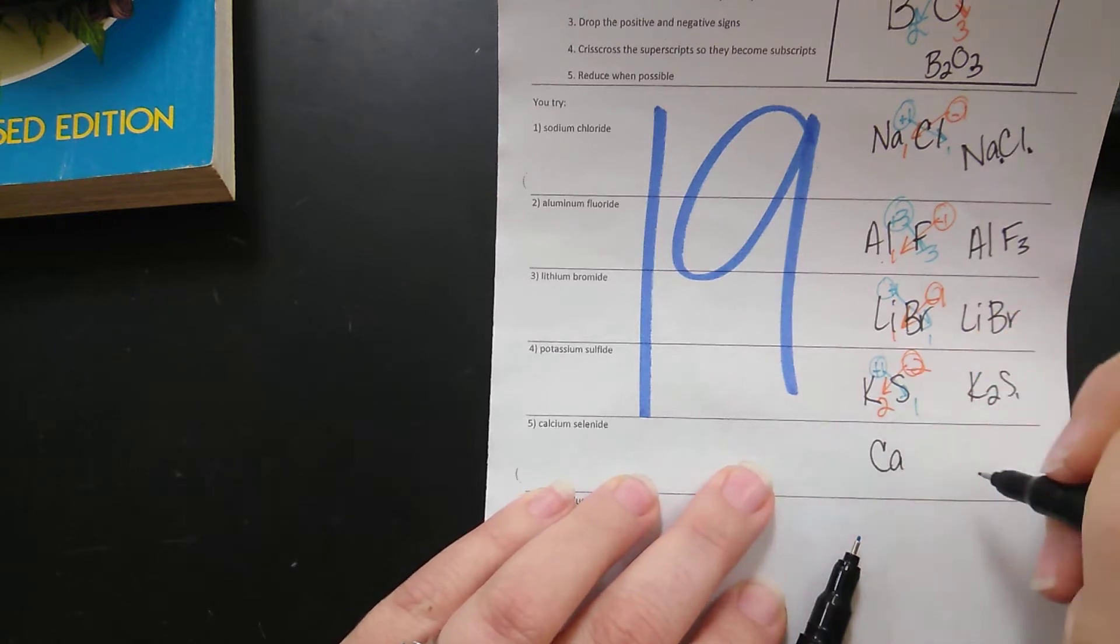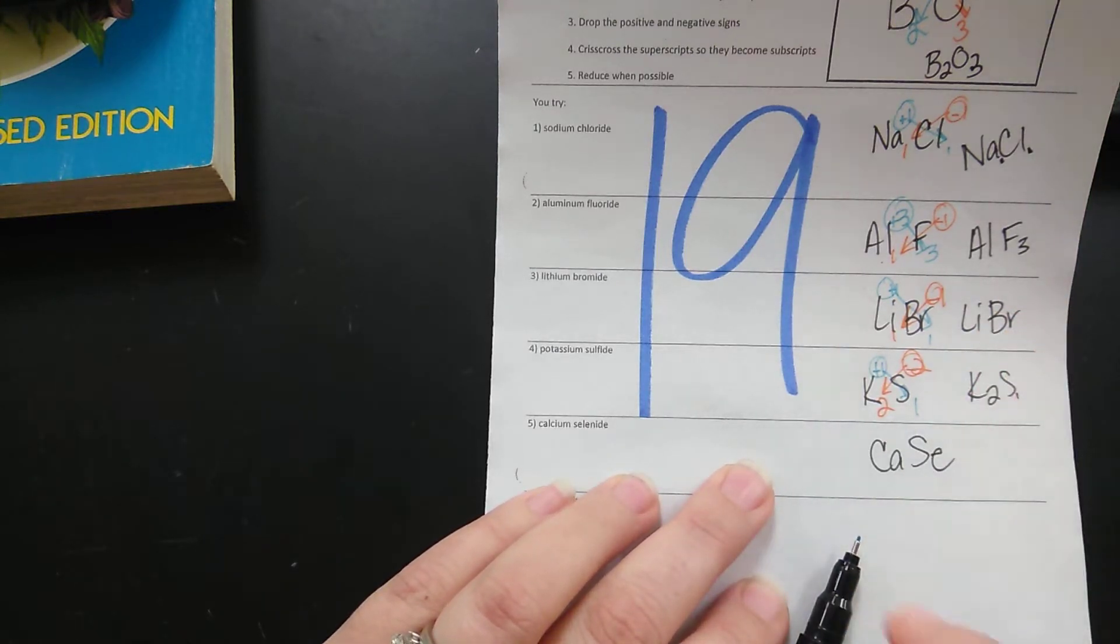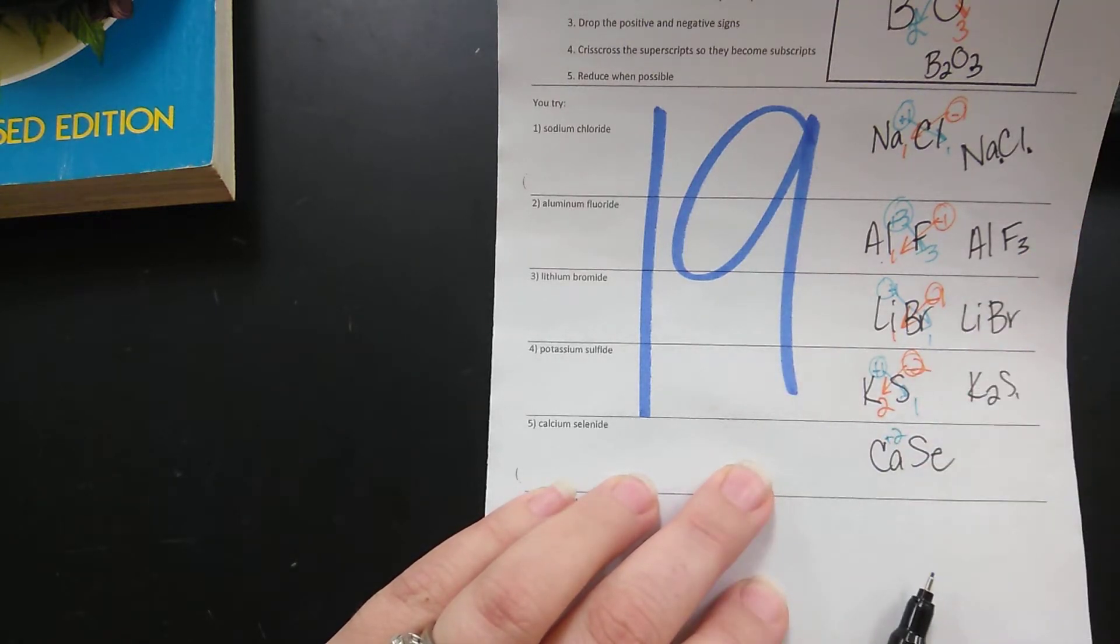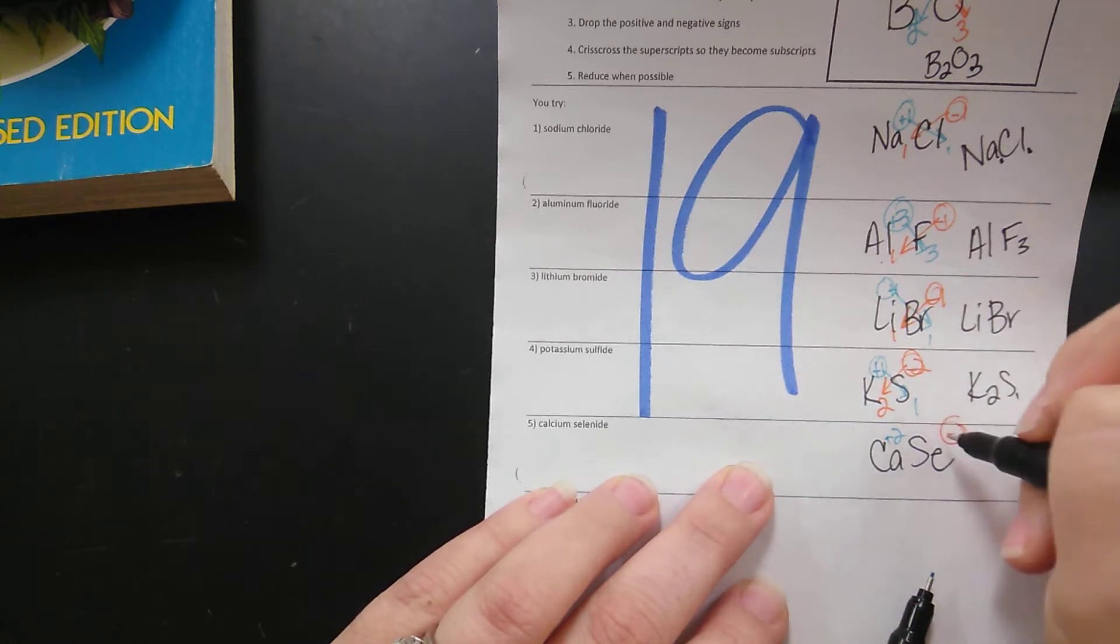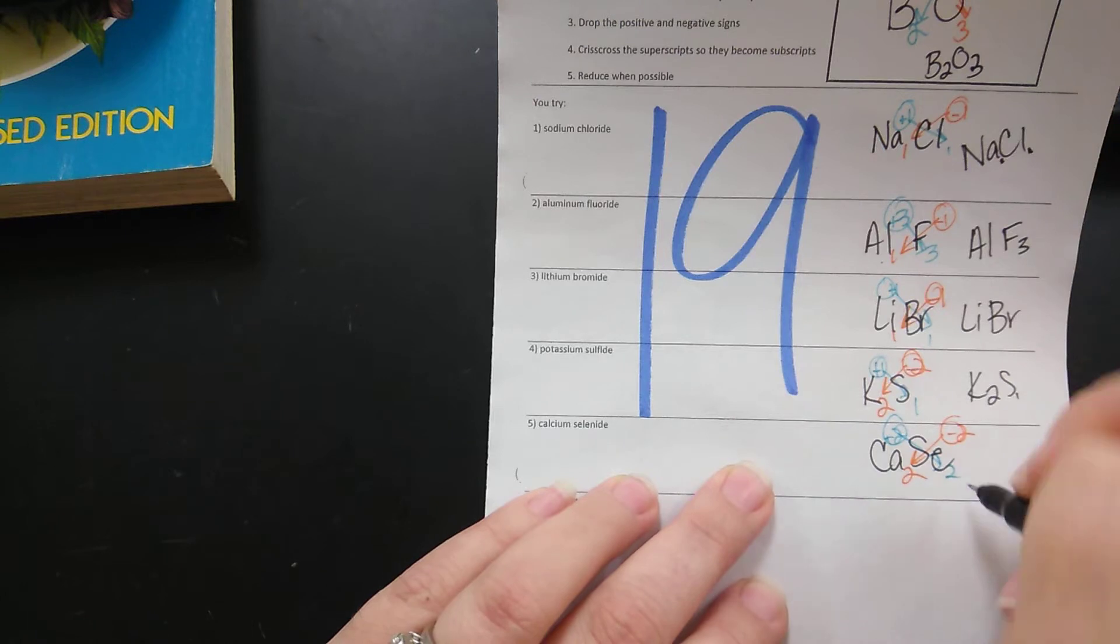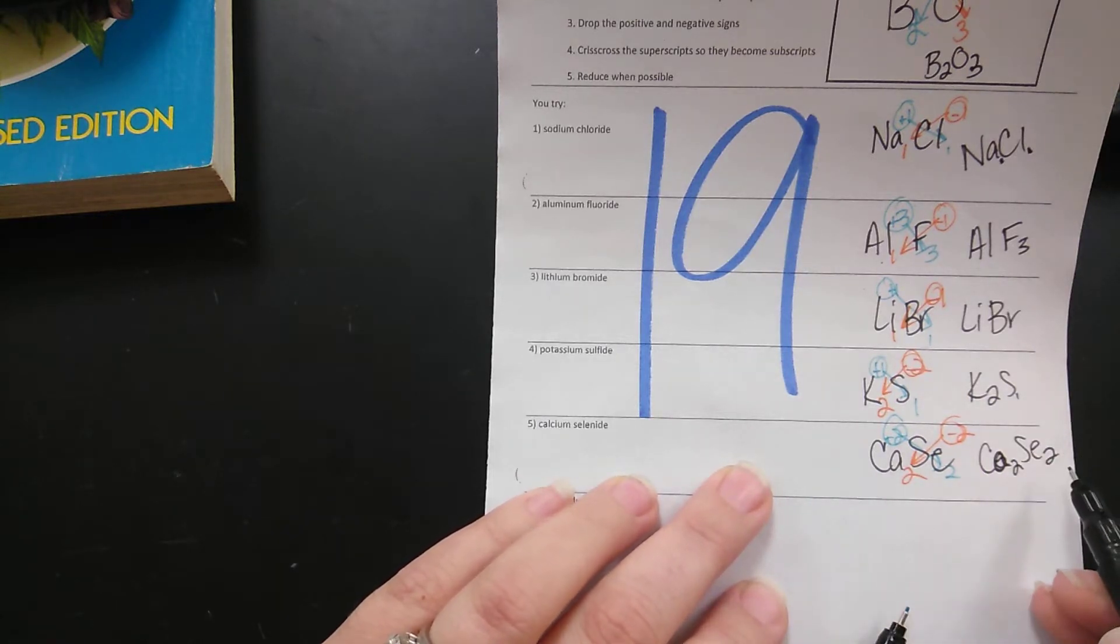Now we have calcium and selenium. Calcium is in group two so it has a positive two charge. Selenium is in group six so it has a negative two charge. Let's cross them. When they react together they do so in a two to two ratio.